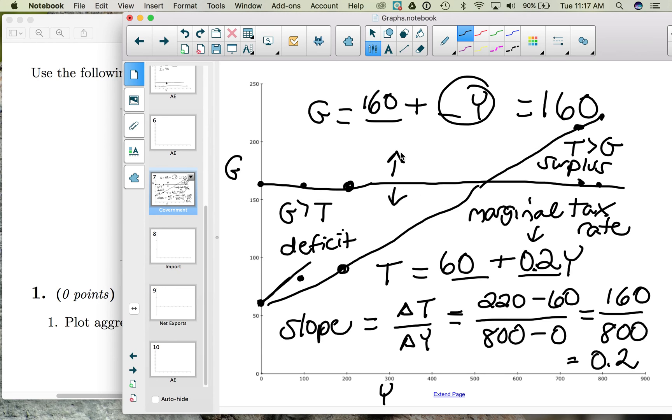A government can decide to spend more if they're trying to stimulate the economy. They can do this at low levels of income or high levels of income. So we're shifting the whole graph up. The government can also decide to spend less. Maybe they're trying to slow the economy down or maybe they're simply prioritizing paying off the debt. If the government is prioritizing paying down the debt, then that means they're not buying goods and services like police cars and building new hospitals, in which case the government spending would shift down.